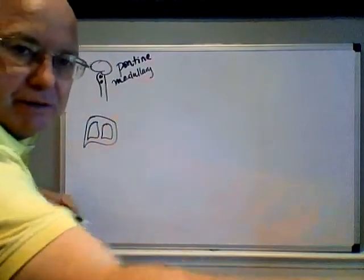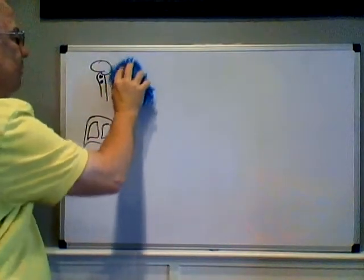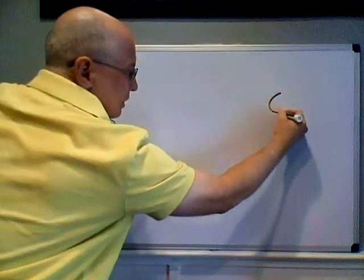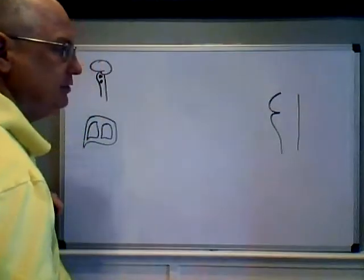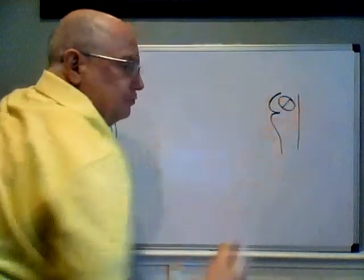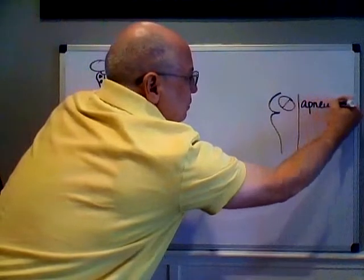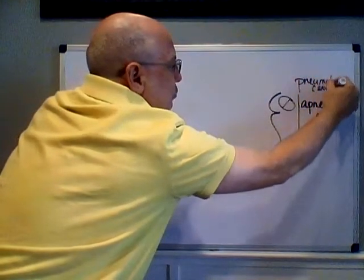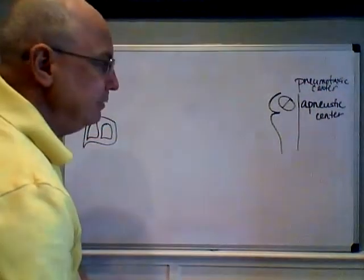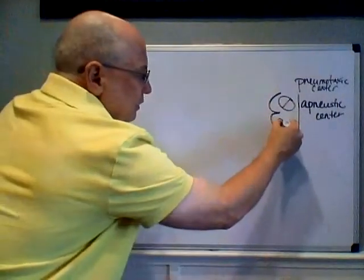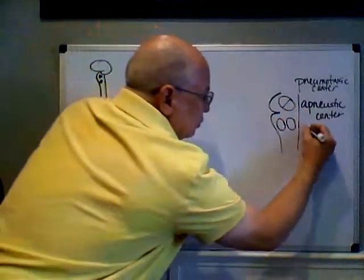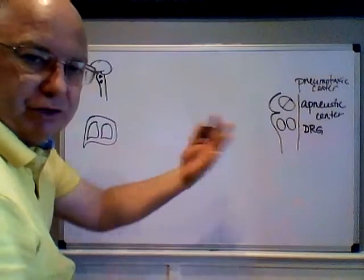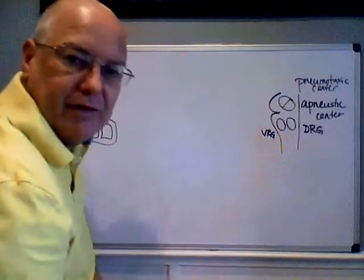The pontine group is divided into two subgroups: the apneustic center and the pneumotaxic center. Down in the medulla we have two as well. The one in the back is called the dorsal respiratory group, abbreviated DRG — dorsal meaning posterior. The one in the front is called the ventral respiratory group, abbreviated VRG, because it's more anterior or ventral.